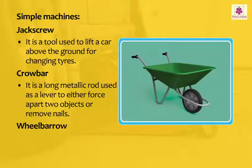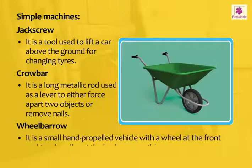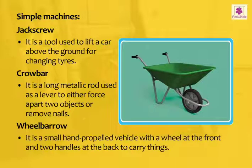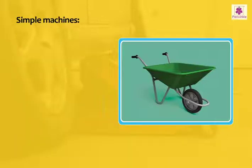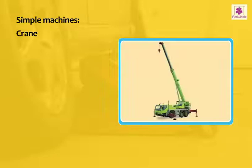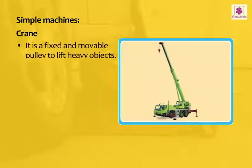A wheelbarrow is a small hand-propelled vehicle with a wheel at the front and two handles at the back to carry things. A crane is a fixed and movable pulley to lift heavy objects.